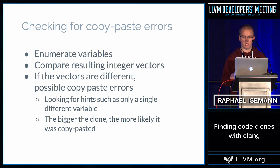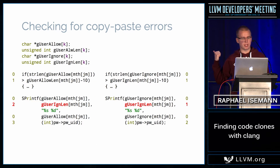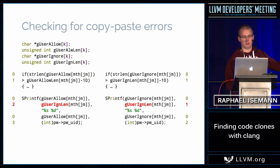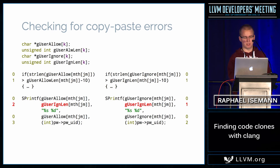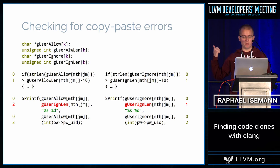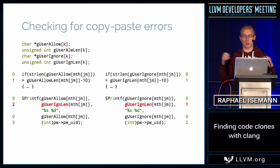To give an example using the opening code: on the left side, 'guser_allow' is new and gets index zero; 'guser_allow_length' is also new and gets index one; 'guser_allow' appears again and gets the existing zero. Then on the bad line, 'ignore_length' is a totally new variable never seen in this piece of code, so it gets a new index. We do the same for the other clone and get a different vector. A different vector gives us a strong hint that something is wrong.